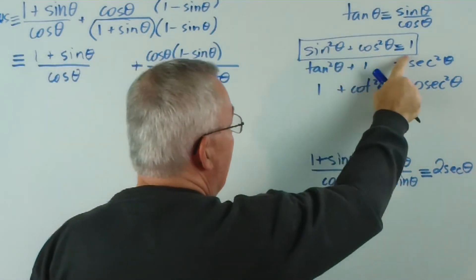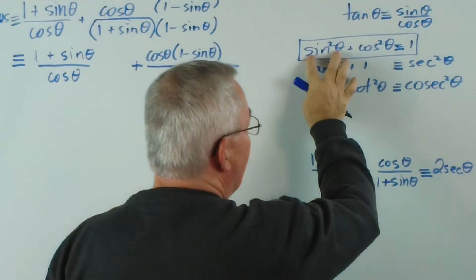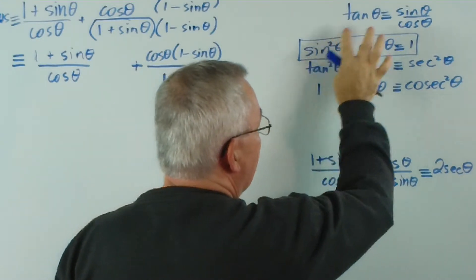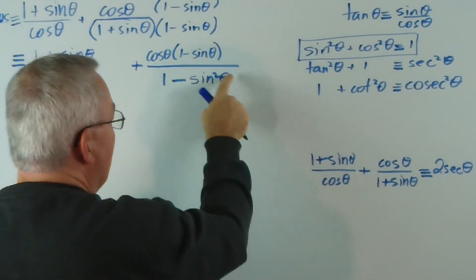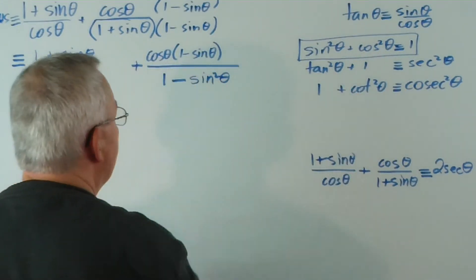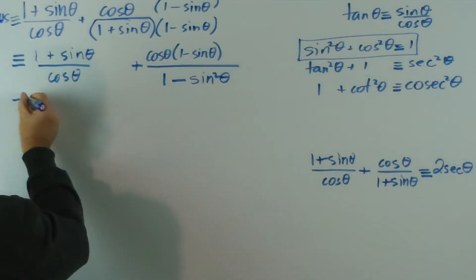But notice in this identity, if I subtract sine squared theta, I get 1 minus sine squared theta is cos squared theta. So I can replace this 1 minus sine squared theta with cos squared theta. Let's do that.